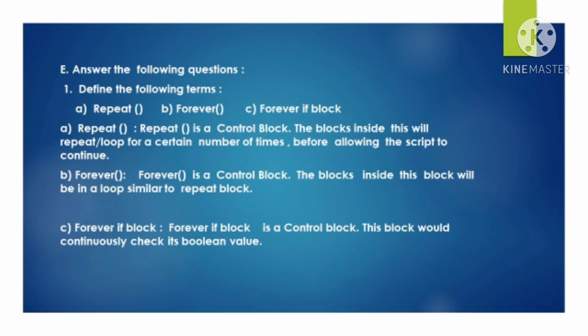Number B: Forever block. Forever is a control block. The block inside this block will be a loop similar to the Repeat block. Number C: Forever if block. Forever if block is a control block. This block would continuously check its boolean value.